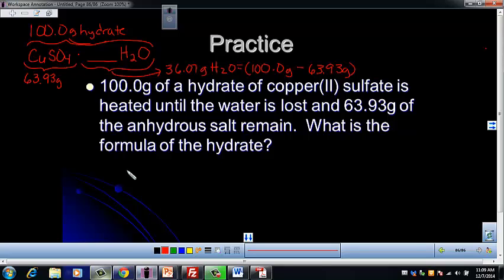So once we do that, we just need to figure out the moles of each of our compounds. So we have 63.93 grams of CuSO4. And we'll go ahead and go from grams of CuSO4, so we're going to put that on the bottom to cancel, to moles of CuSO4.